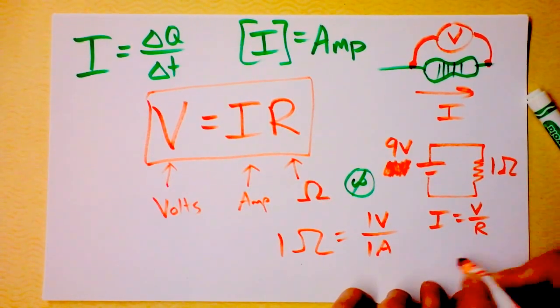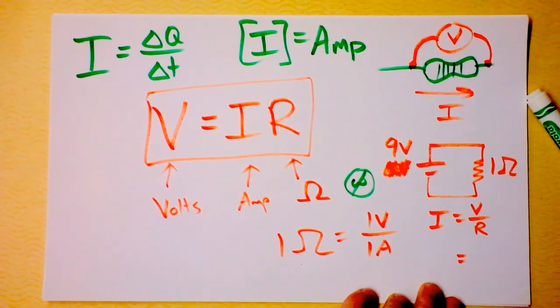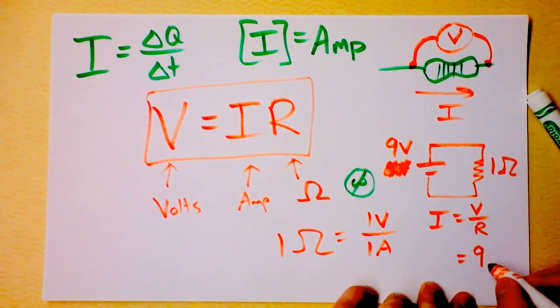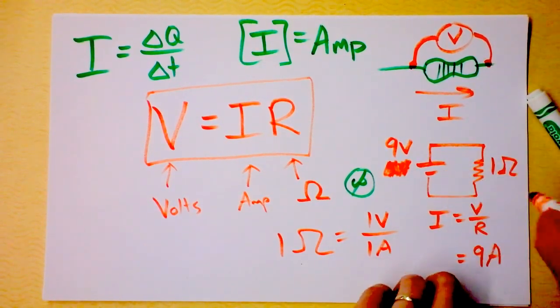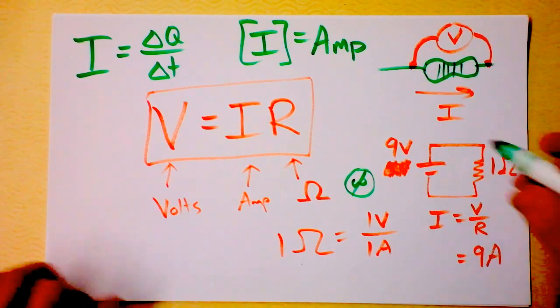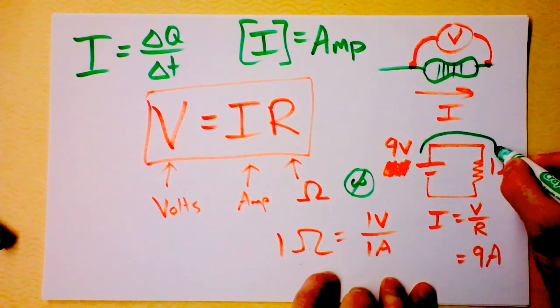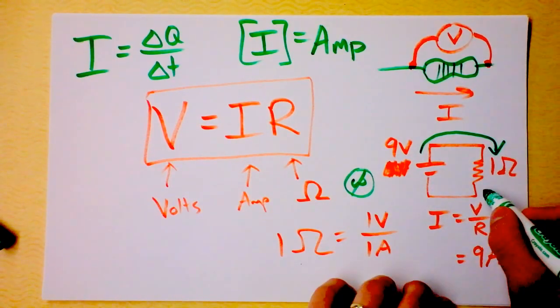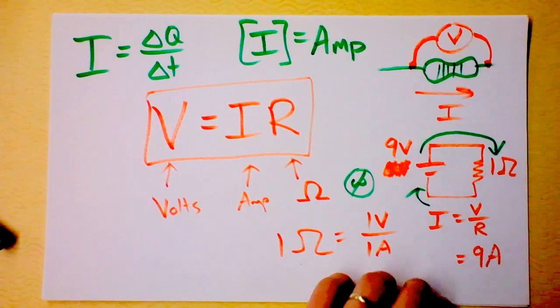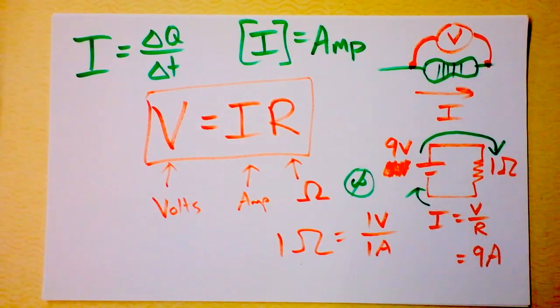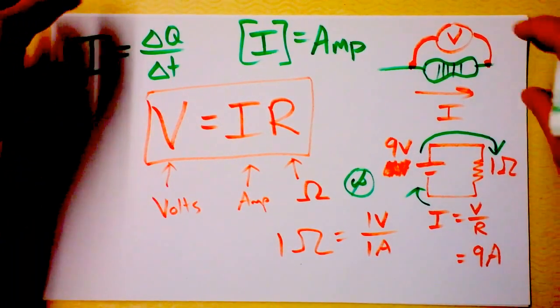I hook up a nine volt battery and this is a one ohm resistor. What is the current that goes through that resistor? Well it's just going to be V over R. So what's the current? Nine amps of current going through this resistor.